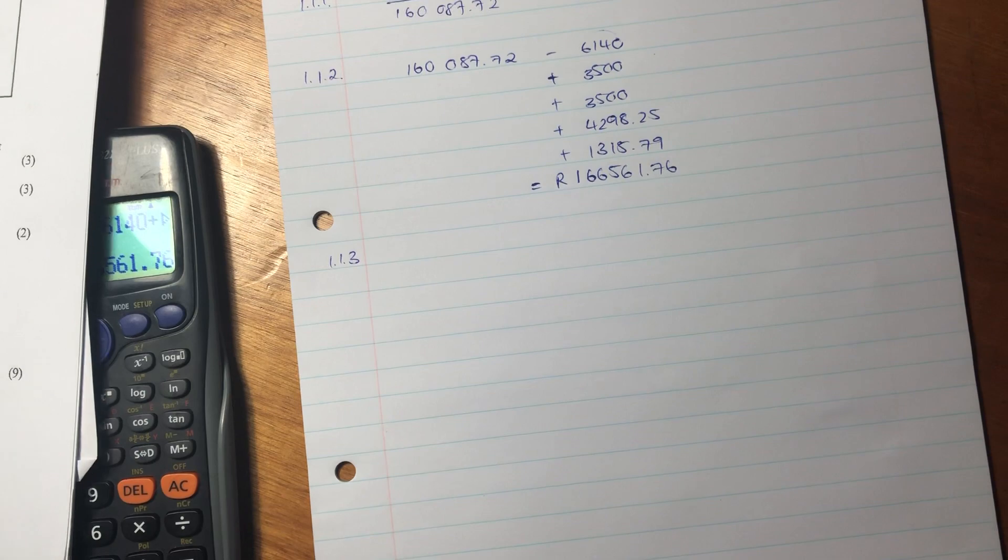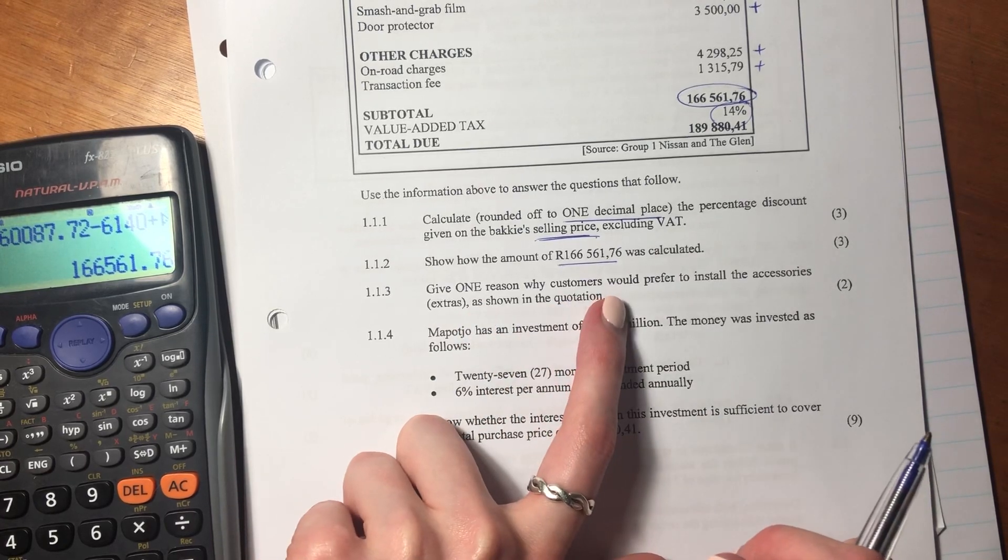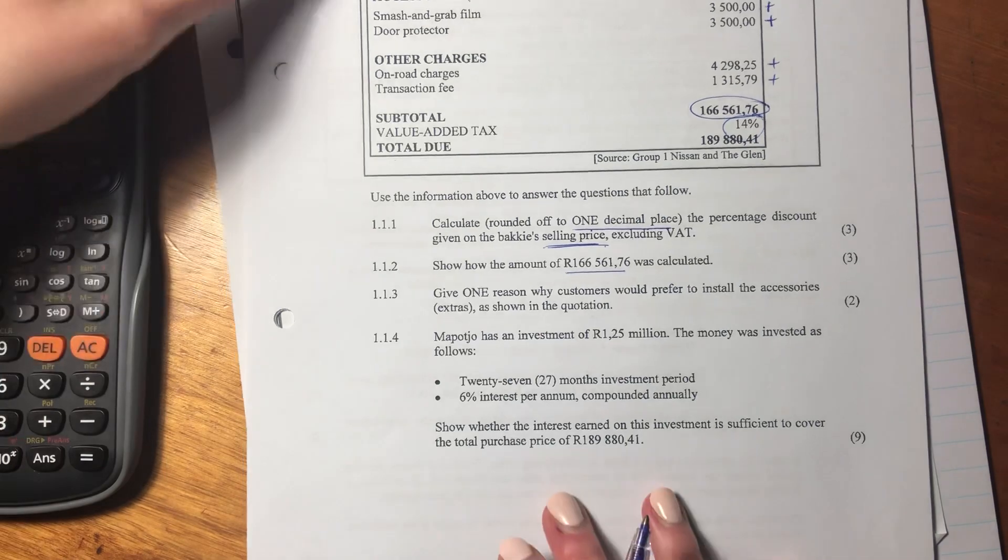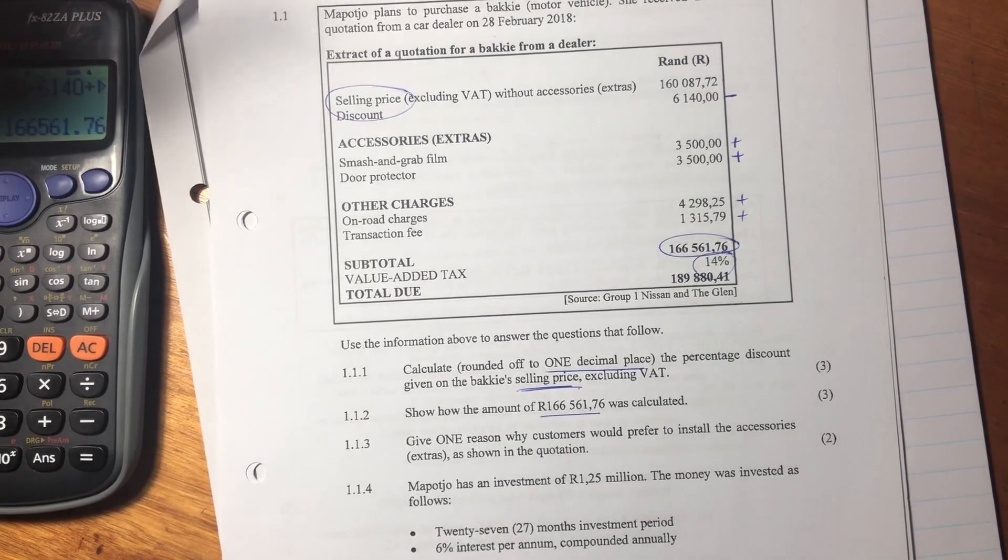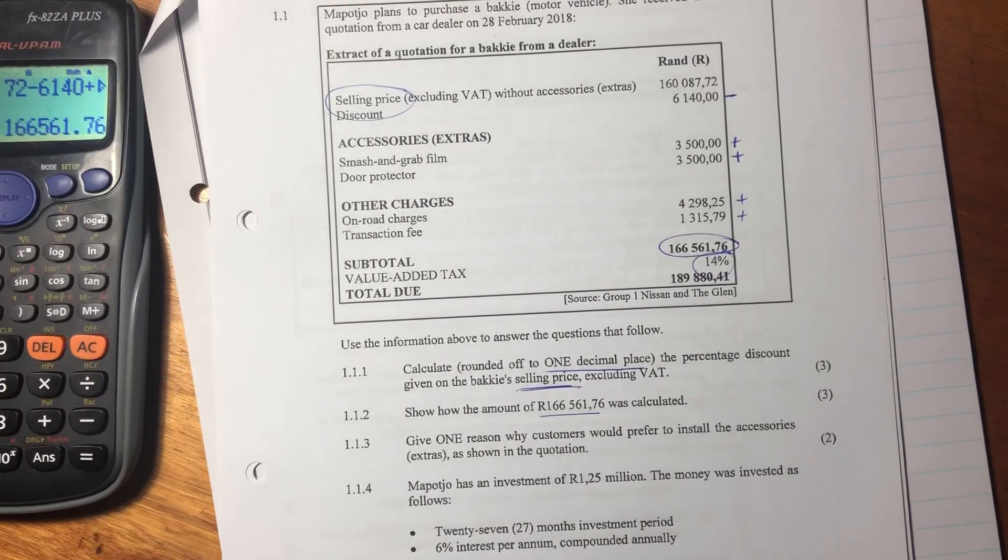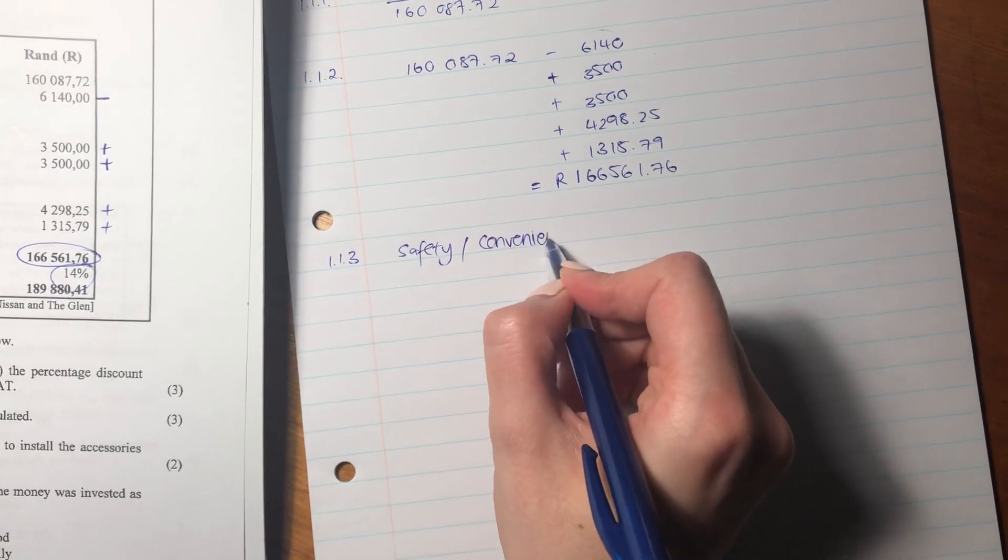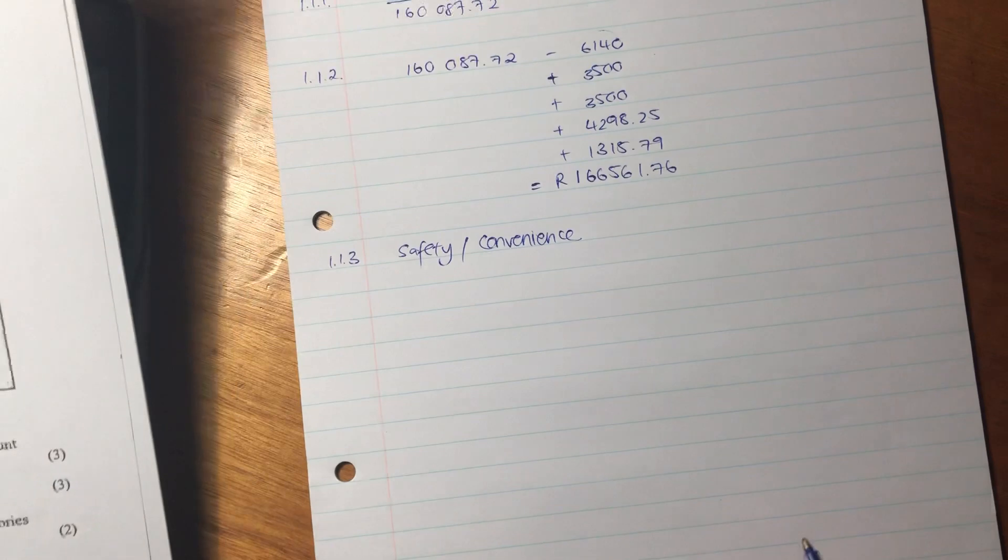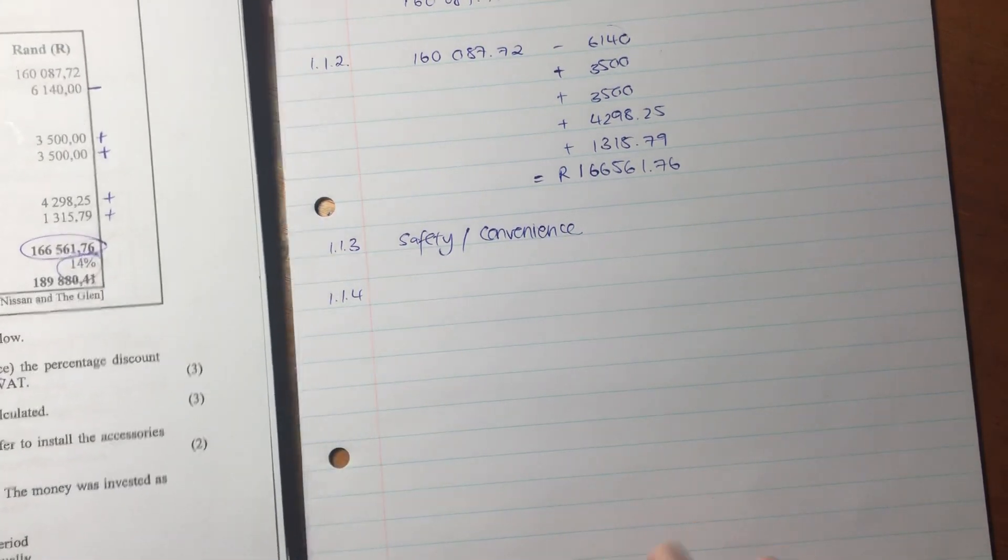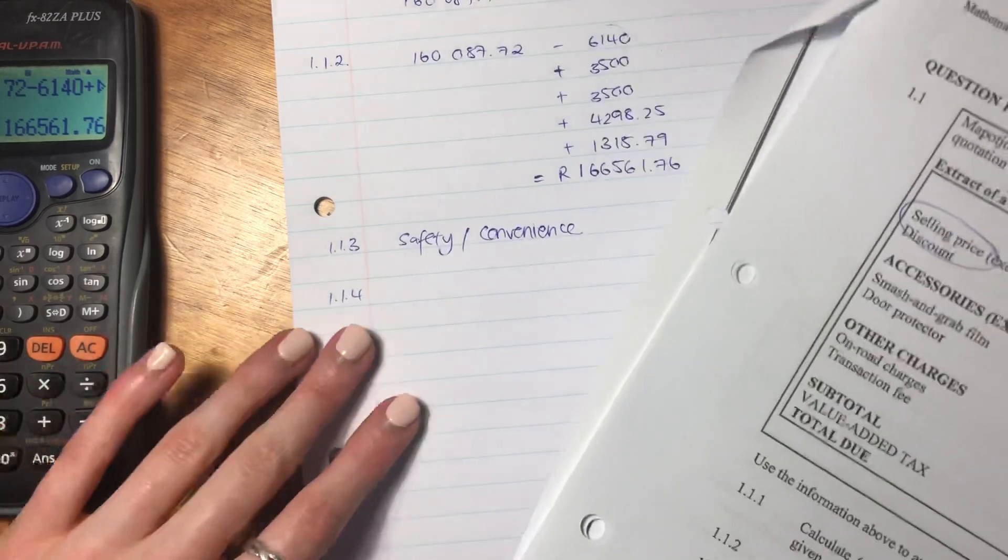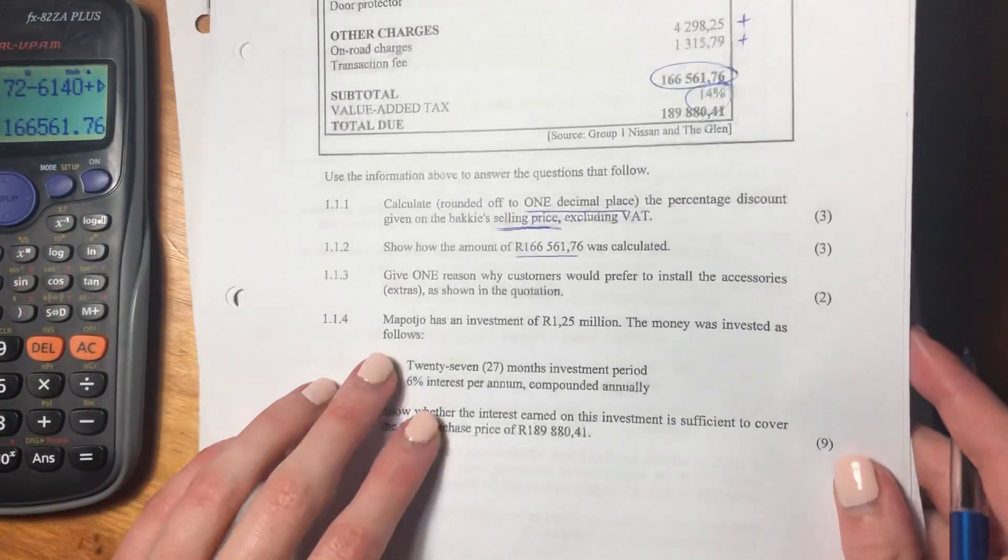So let's now move on to the next question. So these questions are gradually getting more difficult, but it's not too bad yet. So it says give one reason why customers would prefer to install the accessories extra as shown in the quotation. Well, you could give numerous reasons here - it's for safety, it could be convenient, just get your car with all its bells and whistles on already as opposed to having to bring it to other people. I'm just going to say safety or you can say convenience. So that's just one of those questions where they're asking you to interpret what is actually being asked. They're asking you to be very specific about what you are actually seeing. So it's not just this blind application.